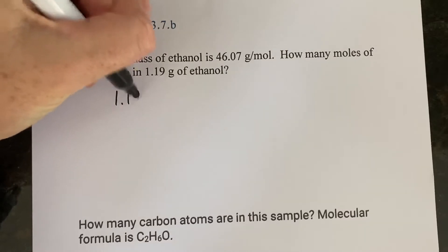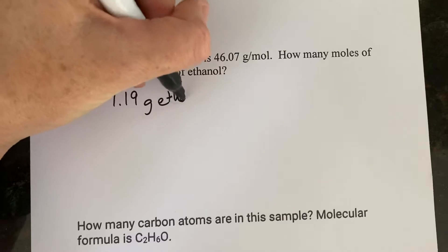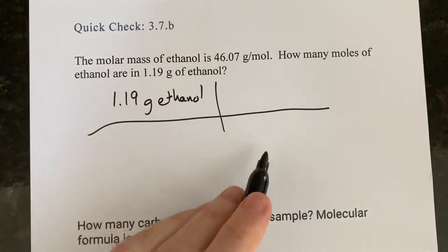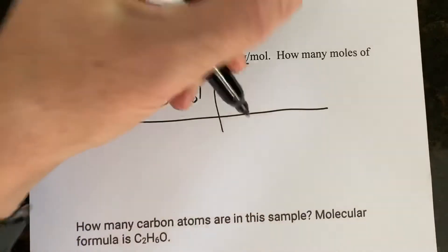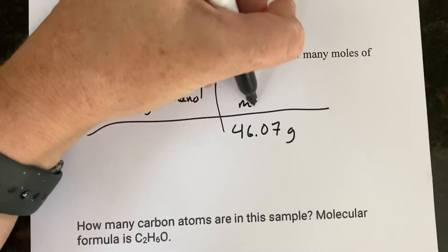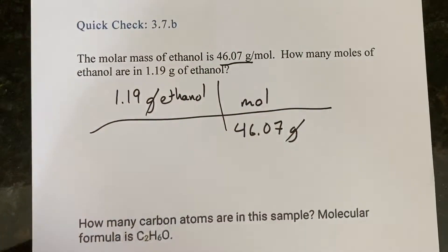So we take 1.19 grams of ethanol. At this point, we don't know the formula, so we'll just go with what we got. And if this is grams, we have to put grams down here. We know that the molar mass is 46.07 grams per mole. So now our grams are going to cancel, and this will result in the moles of ethanol.